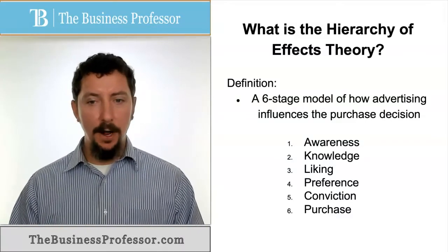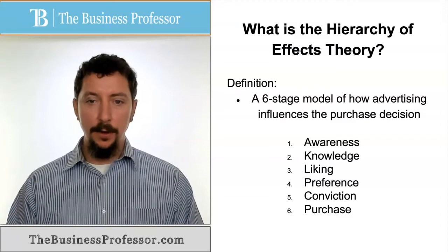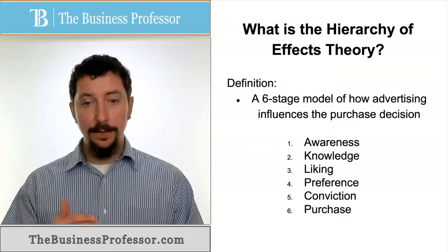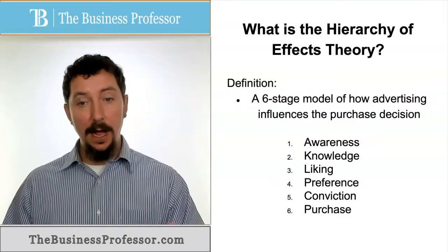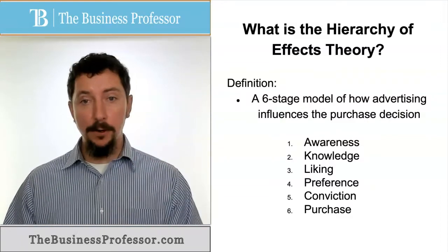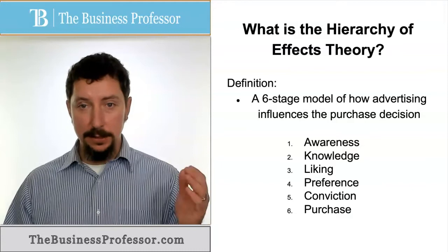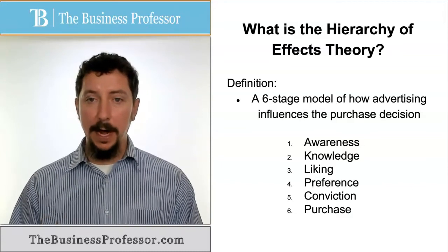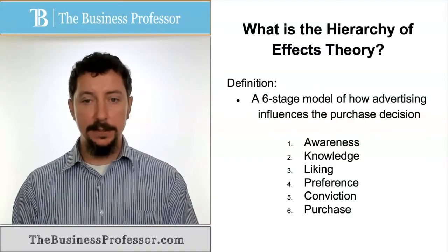Next we have conviction, where somebody has decided they need to take action and go buy the product. After they reach that point, they can actually go out and make the purchase, which is the sixth and final stage of the Hierarchy of Effects Theory.